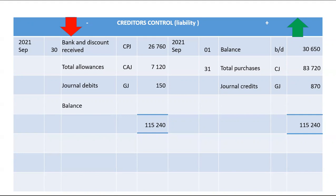We take the bigger side, which is the credit side, and subtract the debit side. So we take 115,240 minus 26,760 minus 7,120 minus 150. The balance carried down will be 81,210, which is basically what we owe our creditors. That becomes the balance brought down.